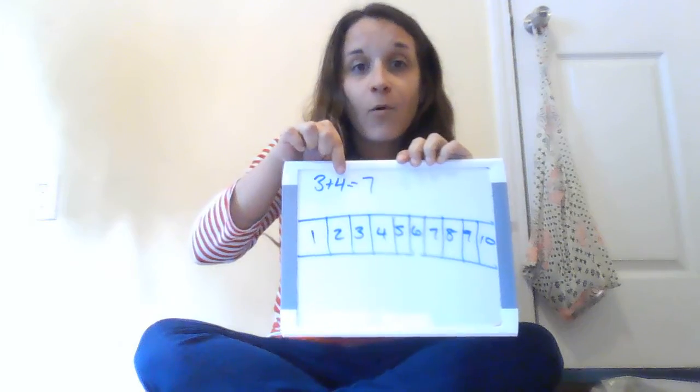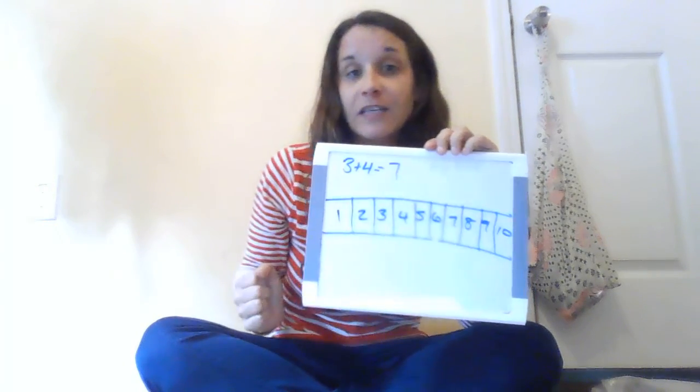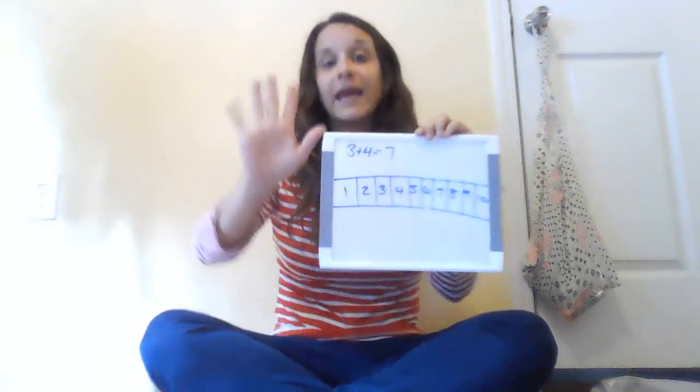And when I count them all together it gives me 1, 2, 3, 4, 5, 6, 7. So we were able to solve the number sentence 3 plus 4 three different ways: using a number line, using a drawing, and using our fingers. I want you to look at the problems on the website and use all 3 strategies to solve each one.